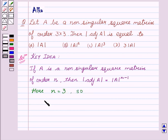So, determinant of adjoint of A equals determinant of A to the power 3 minus 1. And this gives us determinant of A squared.